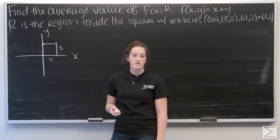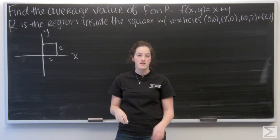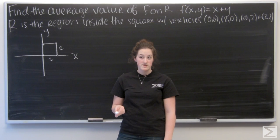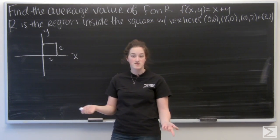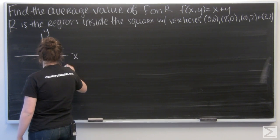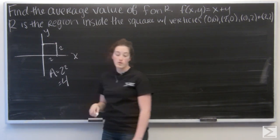So for the average value of a function, I want to integrate over the region and then divide by the area of the region. So finding the area of this region is going to be pretty easy. The area of a square is just side squared, which is 4.